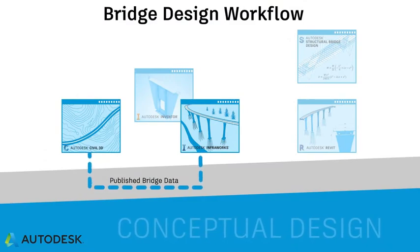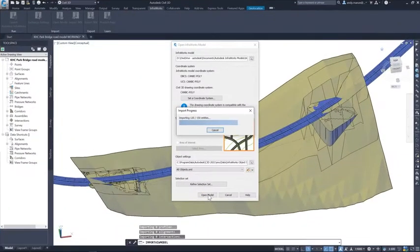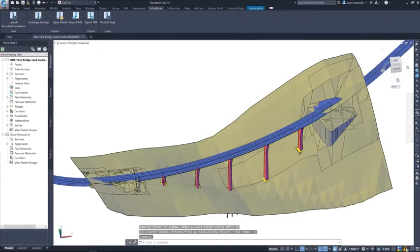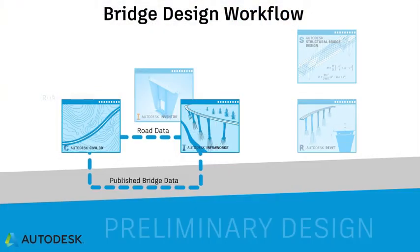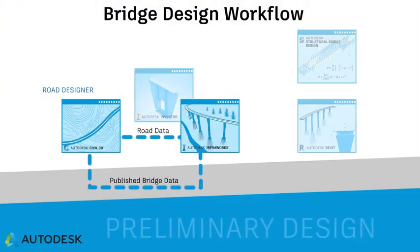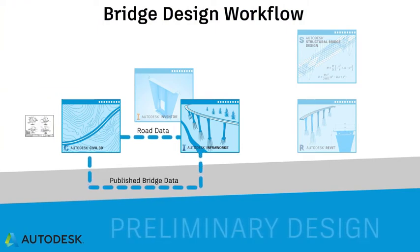This data can then be published and consumed by Civil 3D where the road designer can start to solidify the road design. The road designer can then start to produce the necessary road documentation.